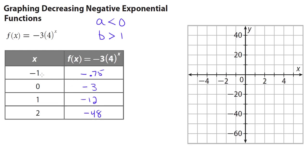Graphing these points: the y-axis counts by tens. At x equals negative 1, y is negative 0.75, very close to the x-axis. At x equals 0, y is negative 3. At x equals 1, y is negative 12, just past the negative 10 line. At x equals 2, y is negative 48, just before the negative 50 line. Draw a smooth curve through these points.